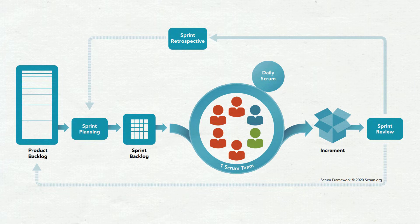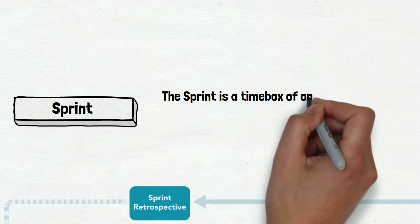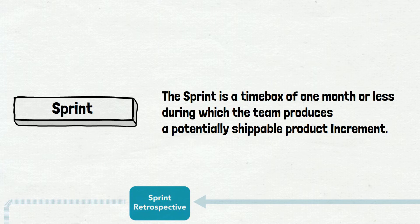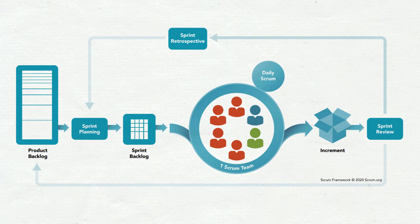The next item on the schema is sprint planning. Before we talk about it, we need to discuss what a sprint is. The word sprint appears on the schema four times. The sprint is a timebox of one month or less during which the team produces a potentially shippable product increment. Scrum is iterative, and the iteration is called a sprint. The iteration lasts from one to four weeks — the most popular are two-week iterations. It starts with sprint planning and ends with the sprint retrospective, as you can see on the schema. Scrum is also incremental, meaning it ships small portions of the product. Very often, teams release to production every sprint, even if it's not mandatory in theory.